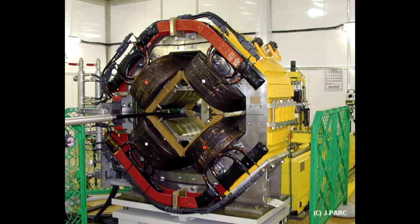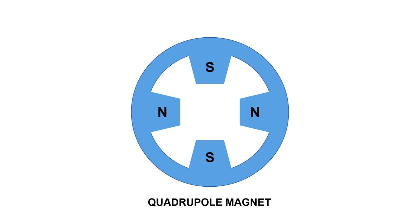Quadrupole magnets are usually used in particle accelerators for focusing particle beams, and they always come in pairs. This is because focusing is only done in one plane at a time. If the horizontal plane is focused, the vertical plane diverges.